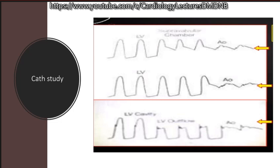Here are three hypothetical catheter pullback tracings. Can you explain which is compatible with valvular, supravalvular, or subvalvular obstruction? In the first tracing the gradient is in the aorta — that is supravalvular. In the middle tracing the gradient is at the level of the valve — that is valvular. In the third tracing, the LV and aortic diastolic pressures equalize with no gradient left below, so the gradient is in the LV — that is sub-aortic, consistent with HOCM.